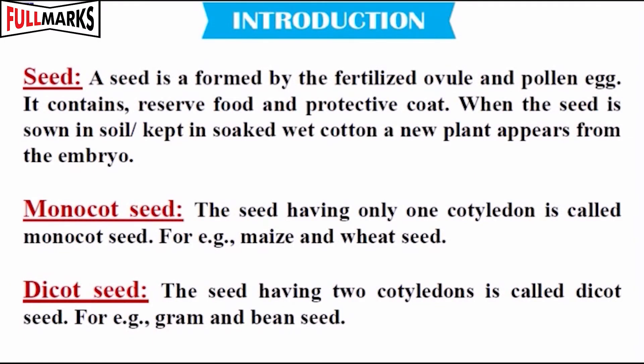Introduction: A seed is formed by a fertilized ovule and pollen egg. It contains reserved food and a protective coat. When the seed is sown in soil or kept in soaked wet cotton, a new plant appears from the embryo.